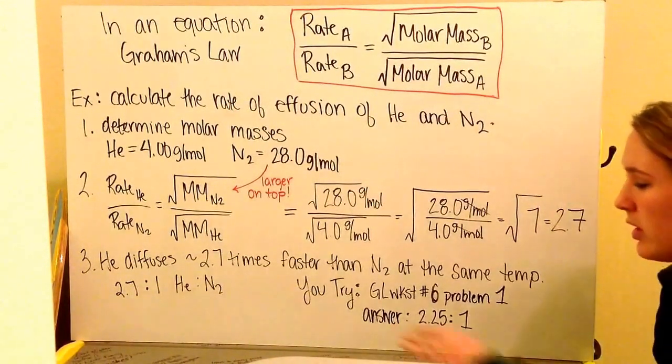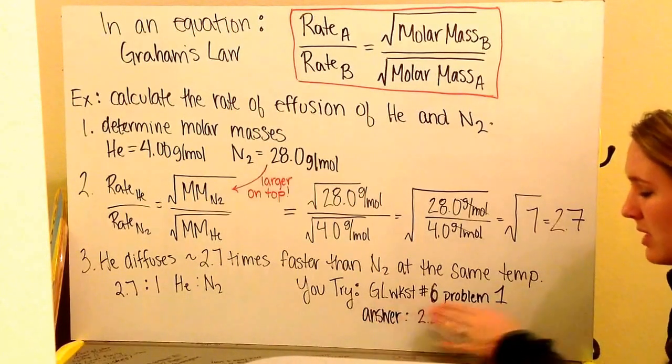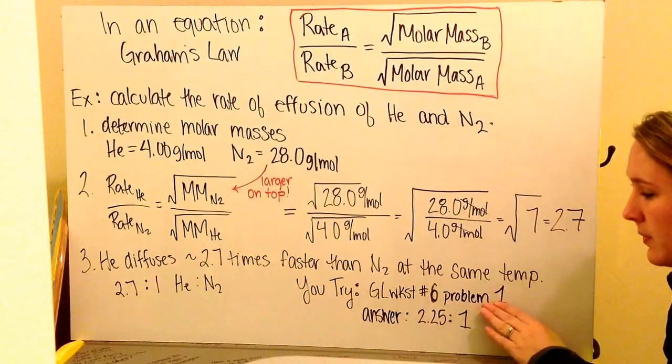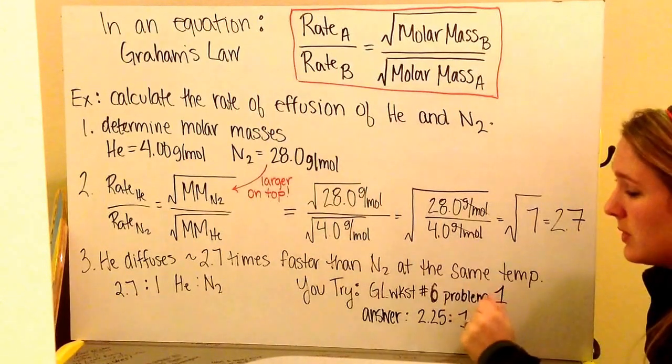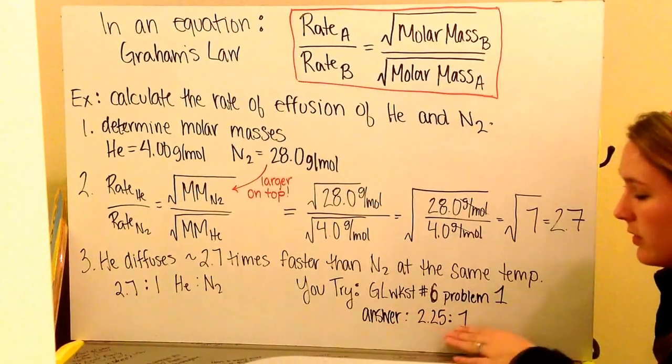Go ahead and try now your Graham's law worksheet number 6, problem 1. You're going to follow the same steps and hopefully you get an answer of 2.25 to 1.